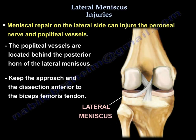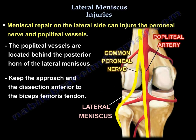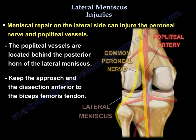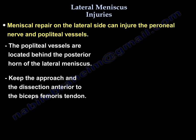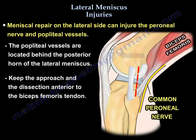The risk of meniscus repair on the lateral side can injure the peroneal nerve and popliteal vessels. The popliteal artery is located behind the posterior horn of the lateral meniscus. Keep the dissection anterior to the biceps.